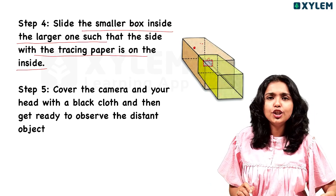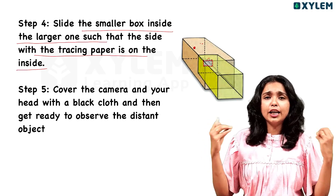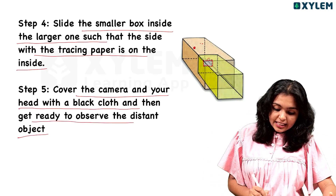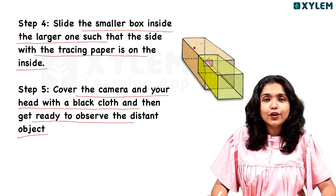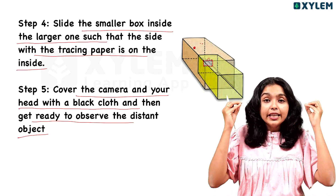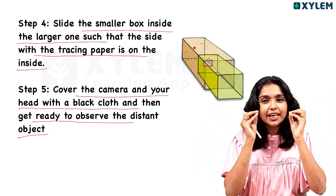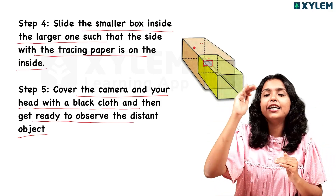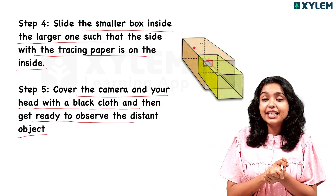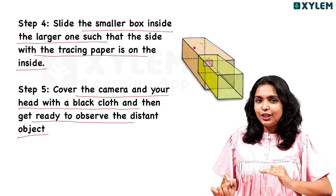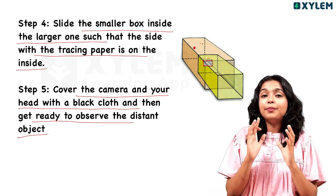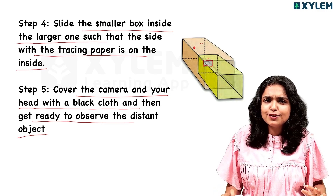You can use black paint on the inside. Cover the camera and your head with a black cloth, and then get ready to observe the distant object. This is the inside and outside of the pinhole camera. When you are on the inside covered with the black cloth, you can look at a distance and see the image.